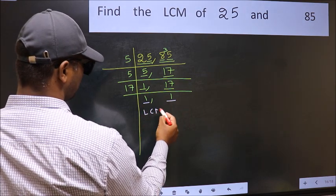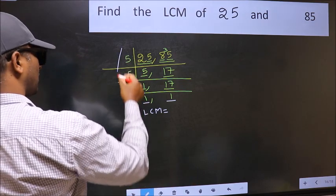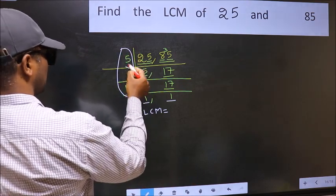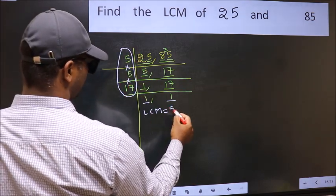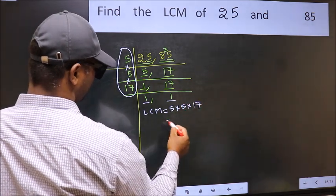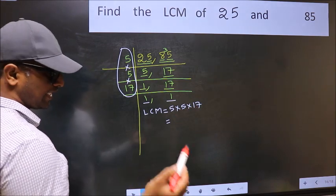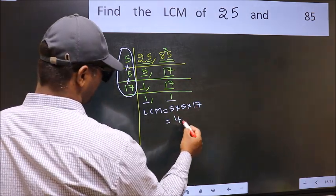So, our LCM is the product of these numbers. That is 5 times 5 times 17. When we multiply these numbers, we get 425.